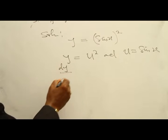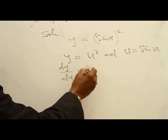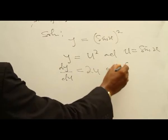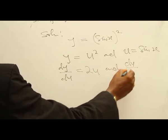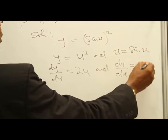Differentiating this with respect to u, we get dy/du = 2u. And differentiating u with respect to x, we get du/dx = cos x.